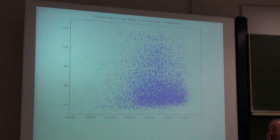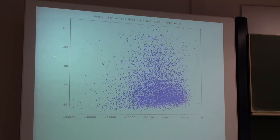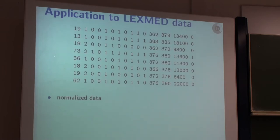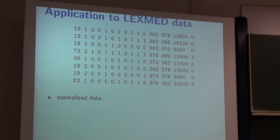Here you don't see much structure — it looks like an almost random distribution of points. But the reason is quite simple. In the not normalized LexMate data, if you don't normalize these data, then the leukocyte value is by far the largest value. And therefore the variance will dominate all the other variances extremely.